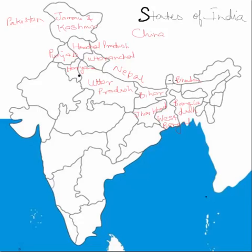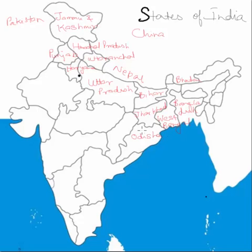We'll leave the northeastern states for last as I want to take a little more time to help you remember them. After West Bengal and Jharkhand, the state bordering both on their southern side, which also touches the Bay of Bengal, is Odisha — earlier known by its older name but now officially called Odisha. To the west of Odisha is a long, elongated state called Chhattisgarh.